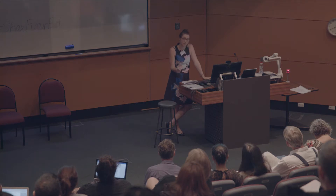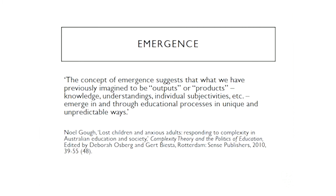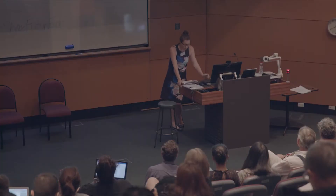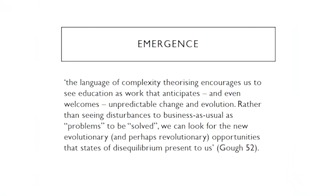So while the aim of educational systems is to provide predetermined, clear, predictable outcomes, that is not always what happens at any level of the system you choose to look at. In his chapter on complexity in Australian education, Noel Goff writes that the concept of emergence suggests that what we have previously imagined should be outputs or products — knowledge, understandings, individual subjectivities, etc. — emerge in and through educational processes in unique and unpredictable ways. Emergence is thus, at its heart, always unpredictable and sometimes unexpected. Goff adds that the language of complexity theorizing encourages us to see education as a work that anticipates and even welcomes unpredictable change and evolution.